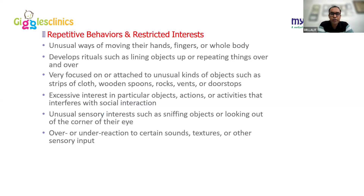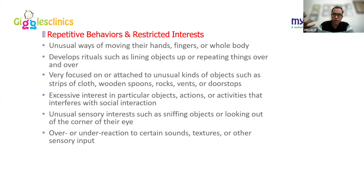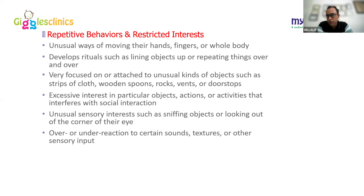Repetitive behaviors and restricted interests in autism include unusual hand movements, rituals like lining up objects, excessive interest in particular objects or activities, and unusual sensory interests — like playing with shadows, rotating things, or enjoying the sounds of utensils on the floor. These are included under restricted repetitive behaviors, also known as stimming.